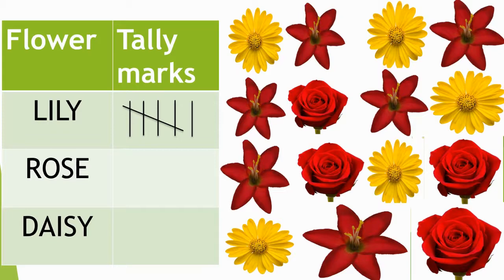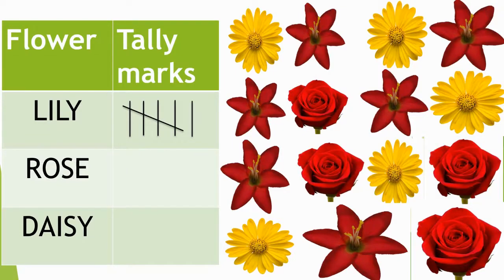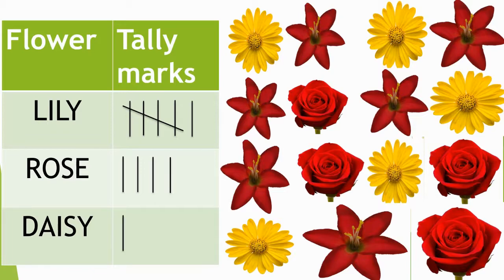Now we will count how many roses there are: 1, 2, 3, 4. There are 4 roses. I will draw 4 tally marks. Now we will count how many daisies there are: 1, 2, 3, 4, 5. There are 5 daisies. I will draw a cross line to make a group of 5.